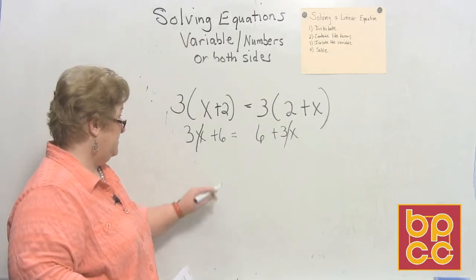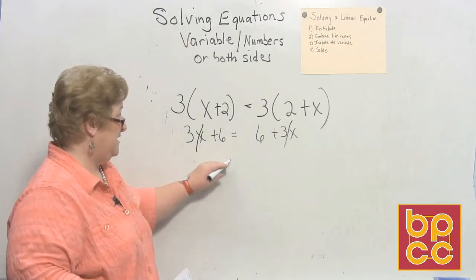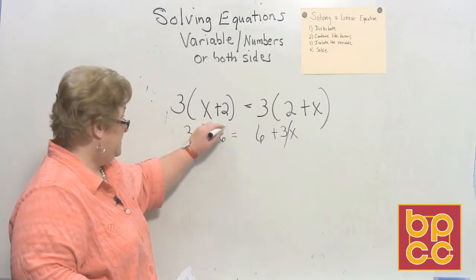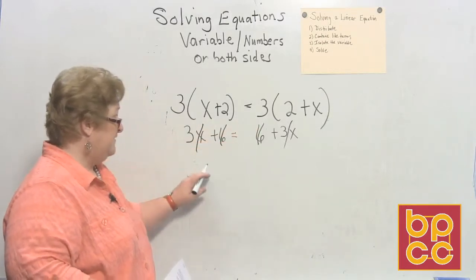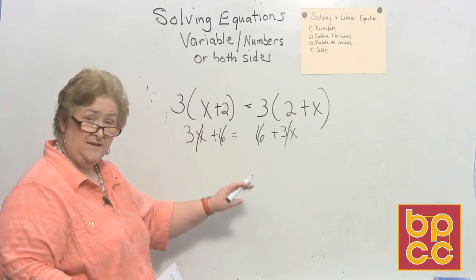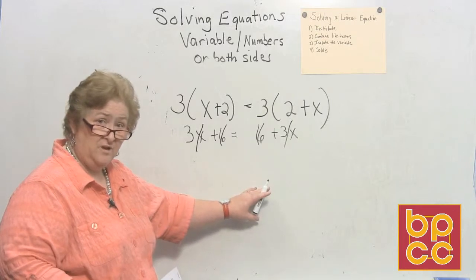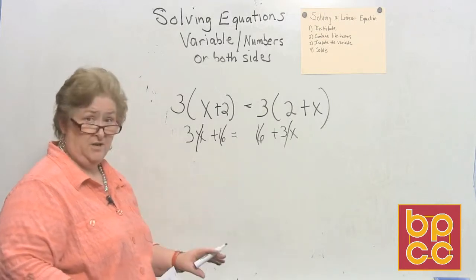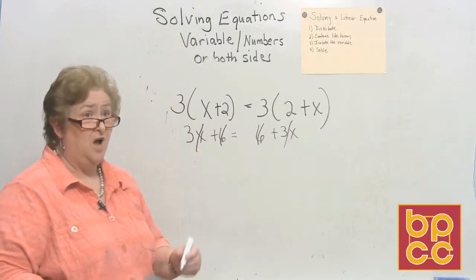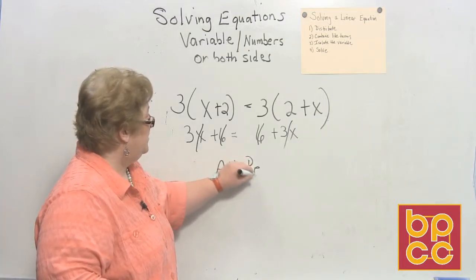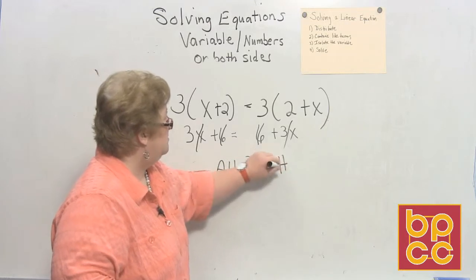And then I go, well wait a minute, those 6's, no matter which way I go, the 6's clear out too. That's a good thing because if the left side and the right side are identical, like identical twins, whatever will work for one side will work for the other. So when everything is clear, I say to you, all clear, and you will say to me, all real numbers.